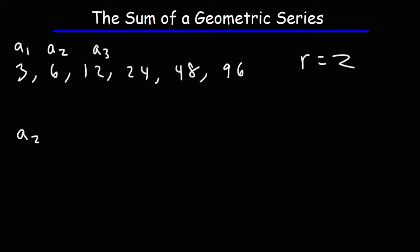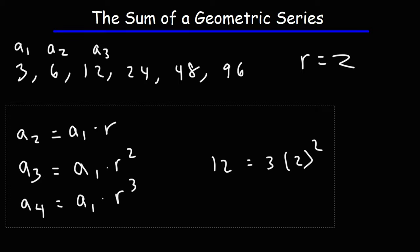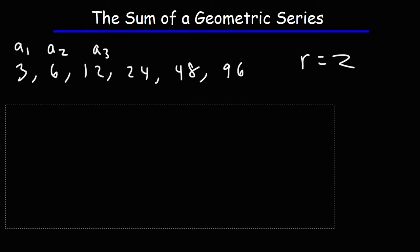Note that the second term is the first term times r: 6 is 3 times 2. The third term is the first term times r squared: 12 is 3 times 2 squared, or 3 times 4. Likewise, if you want to find the fourth term, it's the first term times r cubed — 4 minus 1 is 3. Make sure you understand that because we're going to use that later to prove the formula.